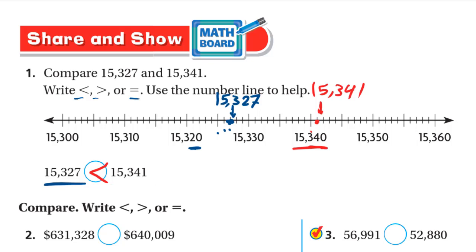Without the number line: both 15,327 and 15,341 have five digits, so we start comparing from the left. The ten-thousands digit is 1 and 1 — same. The thousands digit is 5 and 5 — same. The hundreds digit is 3 and 3 — same. Then we have 2 versus 4. Two is less than four, so 15,327 is less than 15,341.